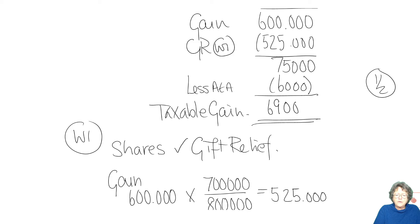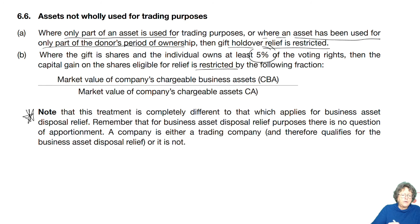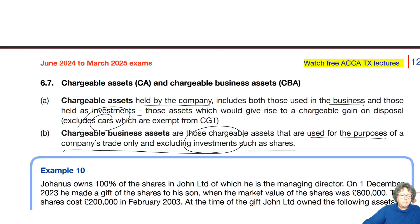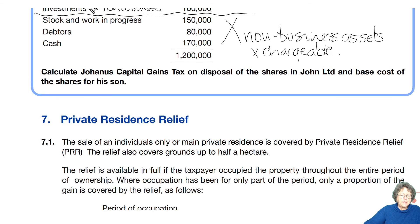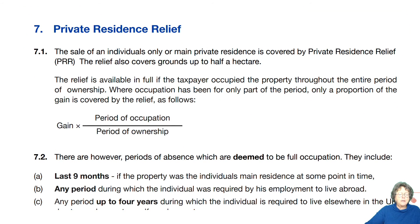By the time we take the annual exemption off, that gives us £69,000 and that will be taxed at 10%. Moving on from example number 10, I'm going to move on to a further relief: residential relief.